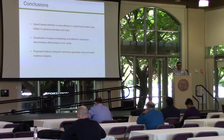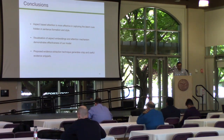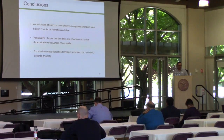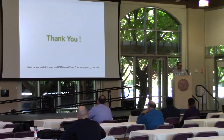As a conclusion, aspect-based attention is more effective when used together with claim text-based attention. Only text-based attention is not sufficient to detect the veracity of the news. By visualization, we show that our embeddings are useful beyond the primary task. We propose an evidence extraction technique that generates crisp and useful evidence snippets, which can also be used for extractive summarization tasks. I want to thank SIGIAC for supporting, and I invite you to my poster if you have any queries. Thank you.